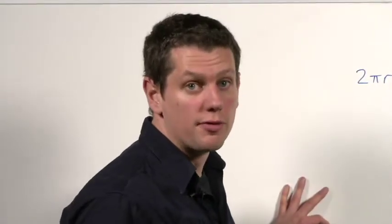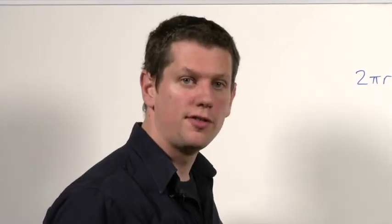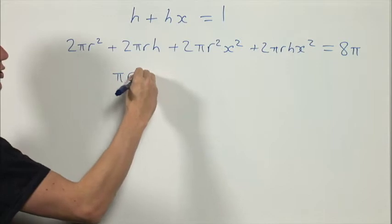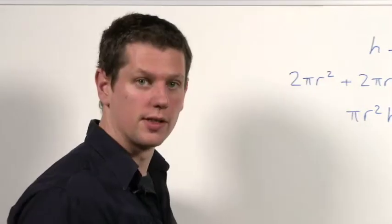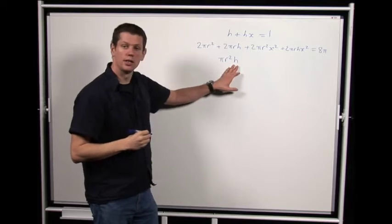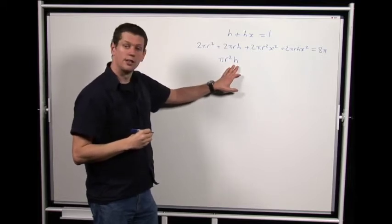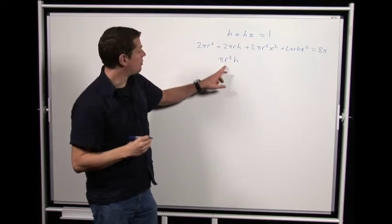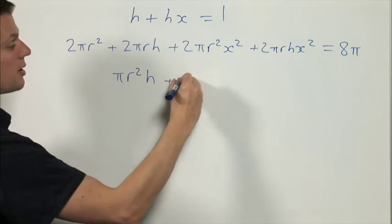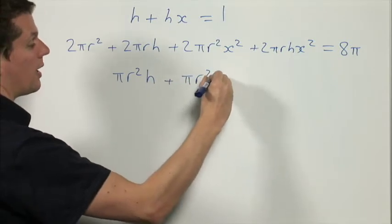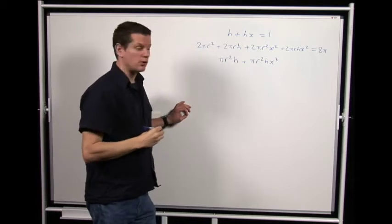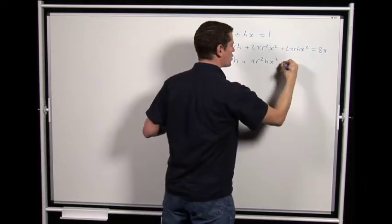Then lastly, there's the equation for the volumes. The volume of the first cylinder is πr²h, because it's a prism of base area πr² and height h. The volume of the other cylinder is similar, only with an x³ in, because the radius and the height are each multiplied by x, giving πr²hx³. And we're told those all add up to 2π.